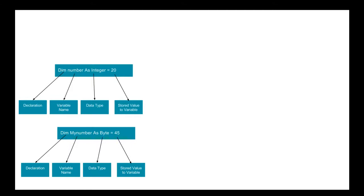Each data has a type. As you can see in my example, I declared 'Dim number As Integer = 20'. The value 20 is a data, so I gave it the type integer. A data type is a classification of data — when we say data type, we are basically saying what type of data the variable may contain.